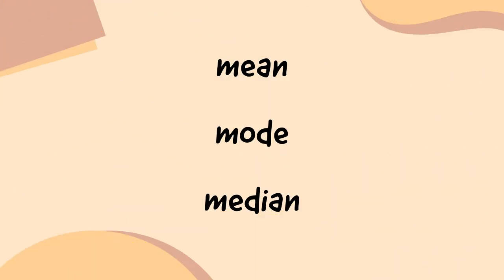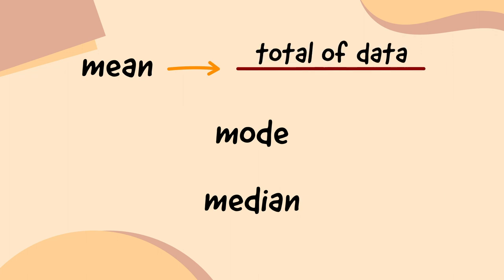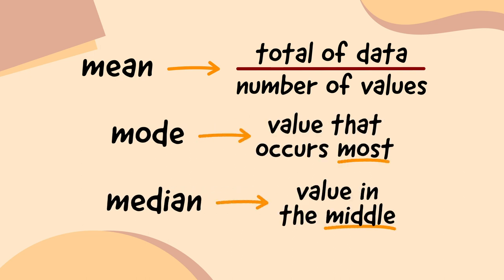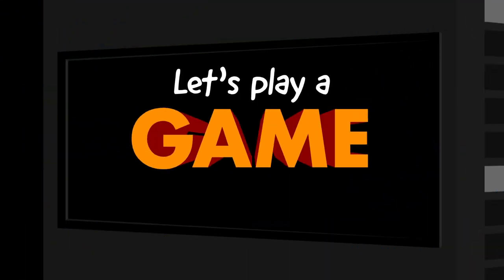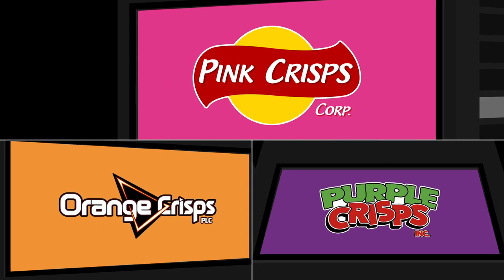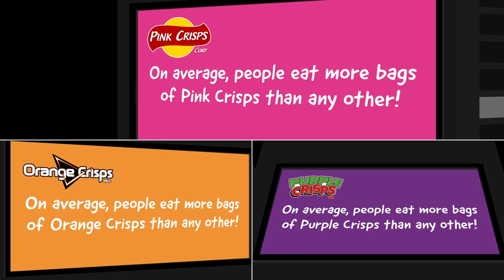Quick recap: the mean is calculated by adding up all the data and dividing it by the number of values there are. The mode is the value that occurs the most, and the median is the value in the middle. Now let's play a game. A brand new case has just come in. Pink Crisps Corp, Orange Crisps PLC, and Purple Crisps Inc are all saying that on average, people eat more bags of their crisps a week than any other. Calculate the averages for each one and work out if any of them are telling lies.